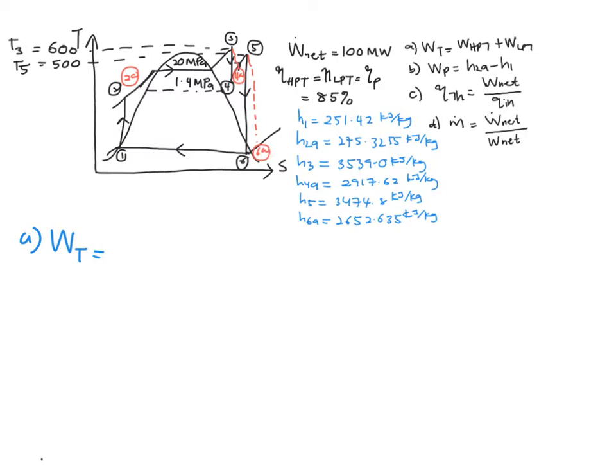So finally, the work of your turbine, you will obtain H3 minus your H4A plus your H5 minus your H6A.